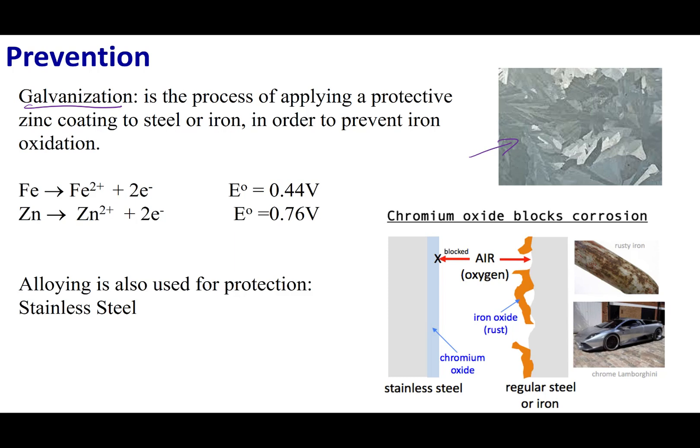So iron is going to be the structural component. Zinc is going to be the protective coating. And because zinc is easier to oxidize, I'm going to sacrifice my coating, i.e. the zinc is going to get oxidized instead of the iron. Occasionally, you have to reapply your zinc coating, and that is going to protect your metal infrastructure.